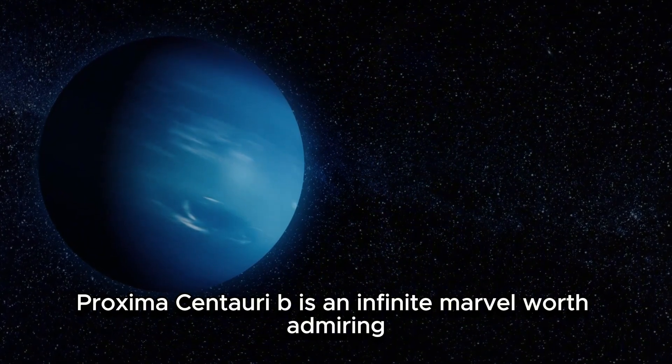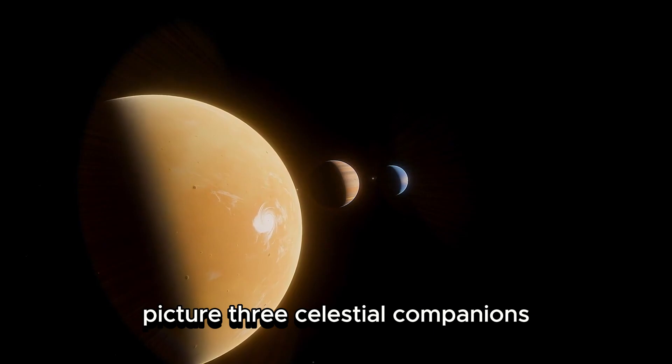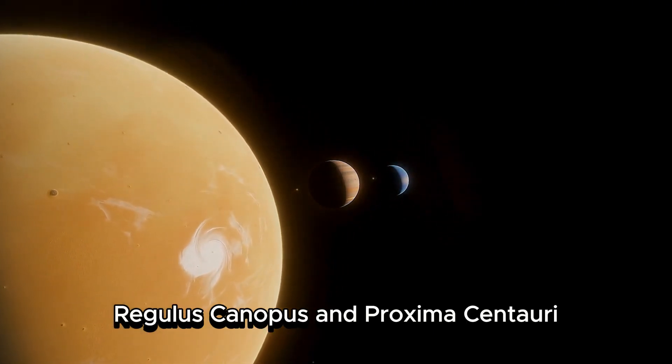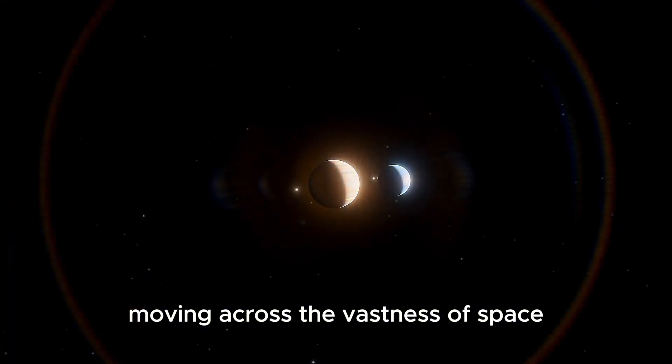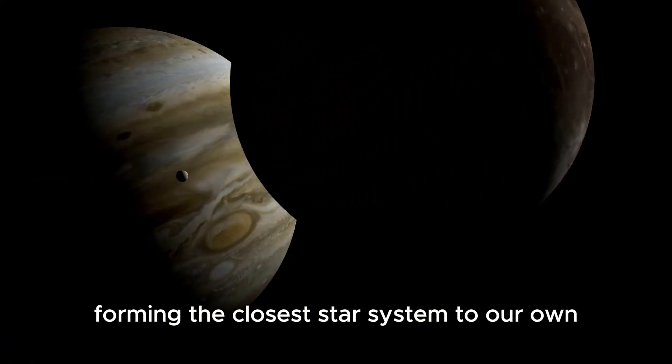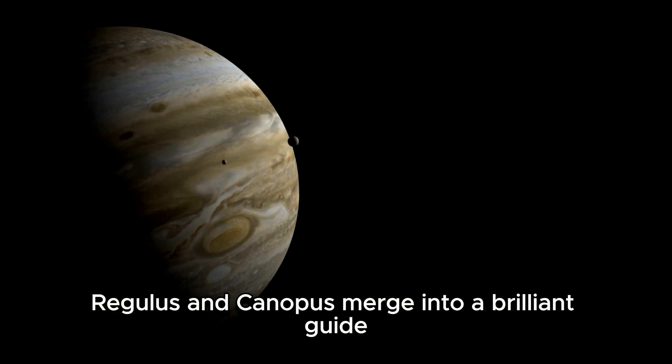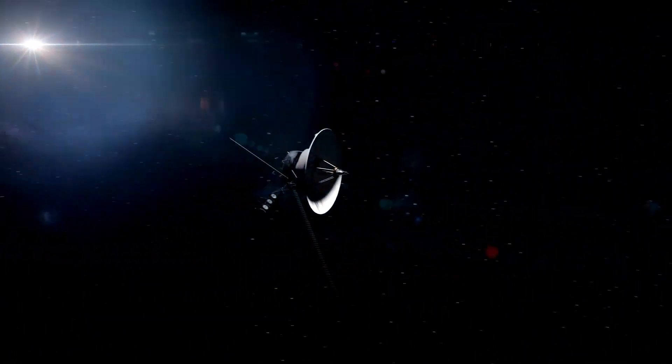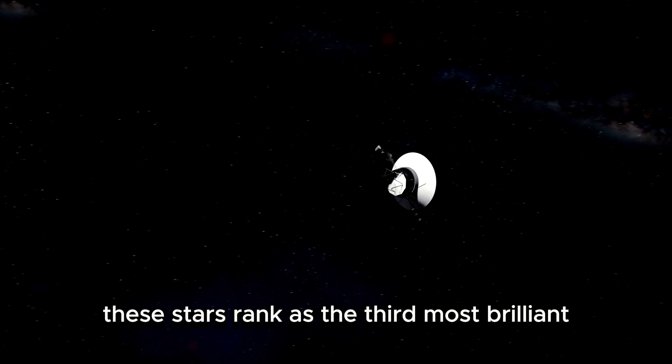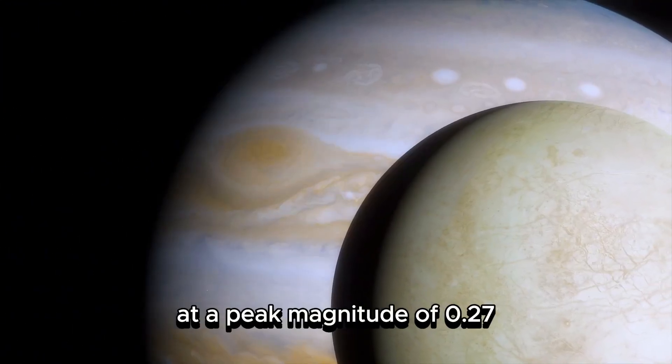Proxima Centauri b is an infinite marvel worth admiring. Picture three celestial companions, Regulus, Canopus, and Proxima Centauri, moving across the vastness of space, forming the closest star system to our own. As we gaze into the night sky, Regulus and Canopus merge into a brilliant guide, shining together in the Carina constellation. These stars rank as the third most brilliant, stunning us with their splendor at a peak magnitude of 0.27.